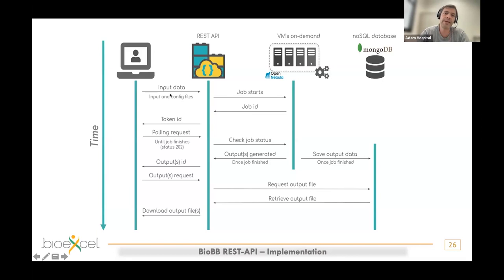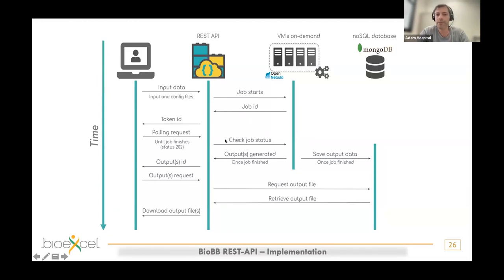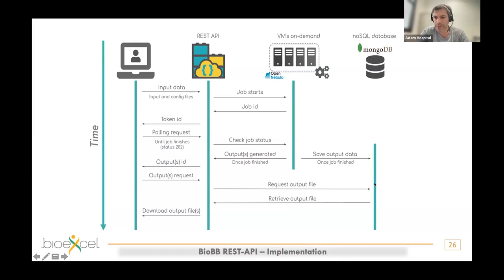Most executions are asynchronous because they need time — an MD simulation can take hours. The user sends input and configuration files to the REST API, the job starts in our virtual machines, and a job ID is returned to the user. This token ID is then used to poll the job status. Once the job is finished, the output data is saved in our database and the output ID is returned to the user, who can then request and download the output files.